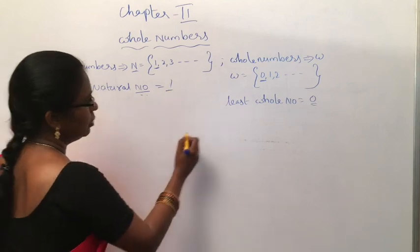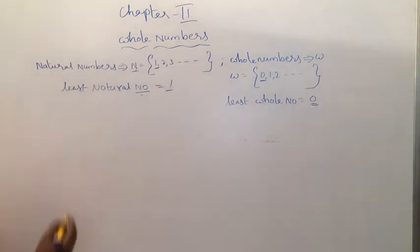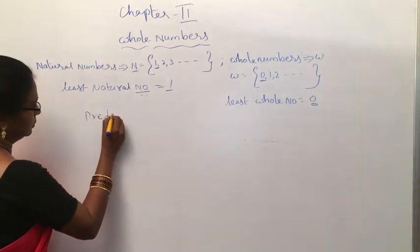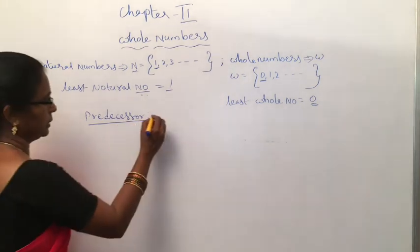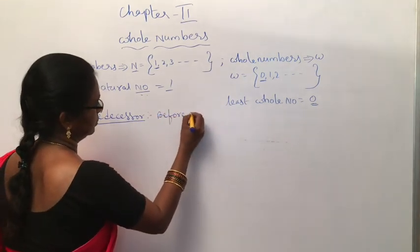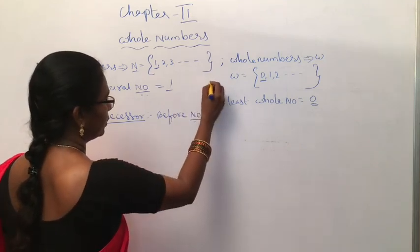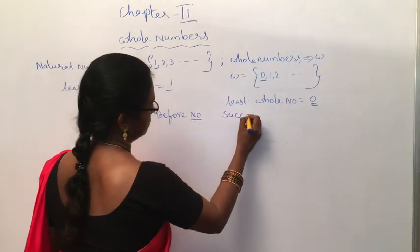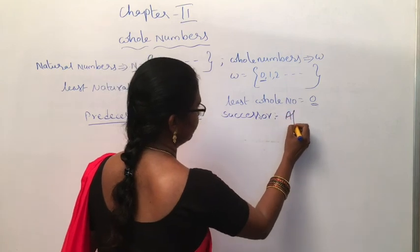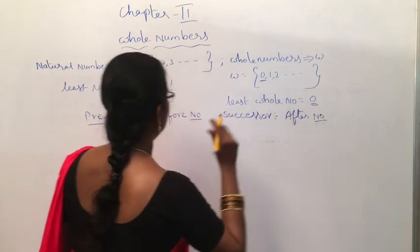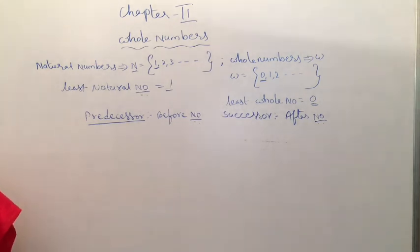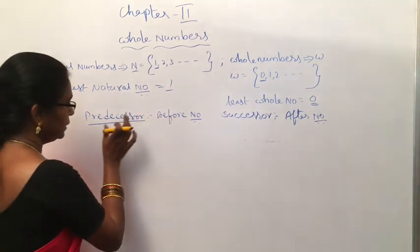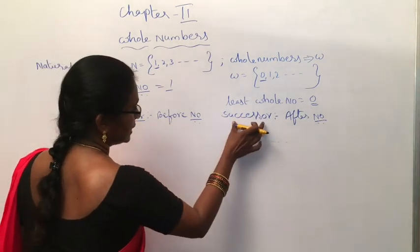The least natural number is 1 and the least whole number is 0. Now, what is the meaning of predecessor? Predecessor means the before number. Successor means the after number. In 5th class you already learnt before number, after number, successor, predecessor, and comparing numbers. Once again we recall: predecessor means before number, successor means after number.